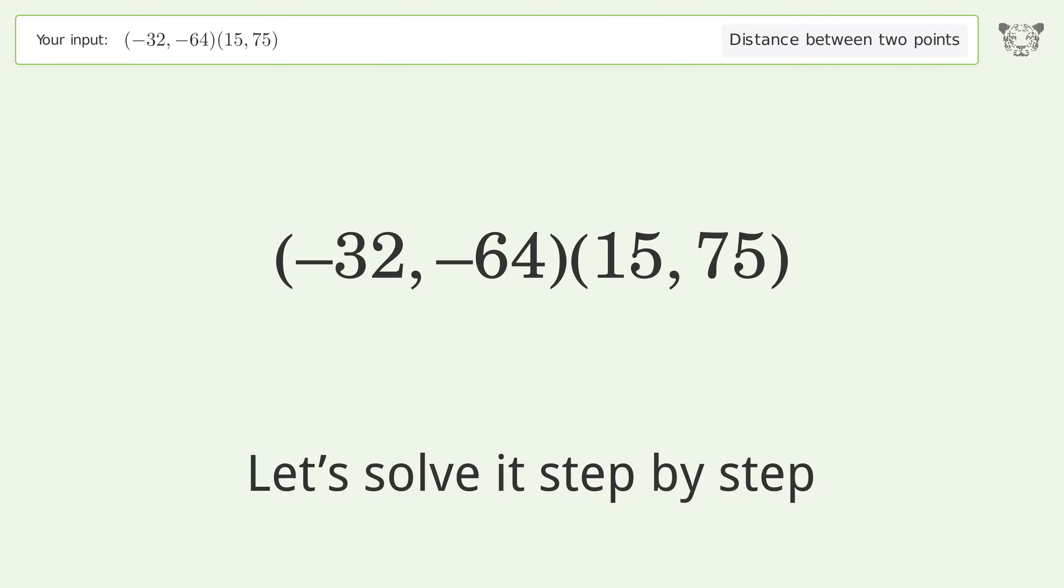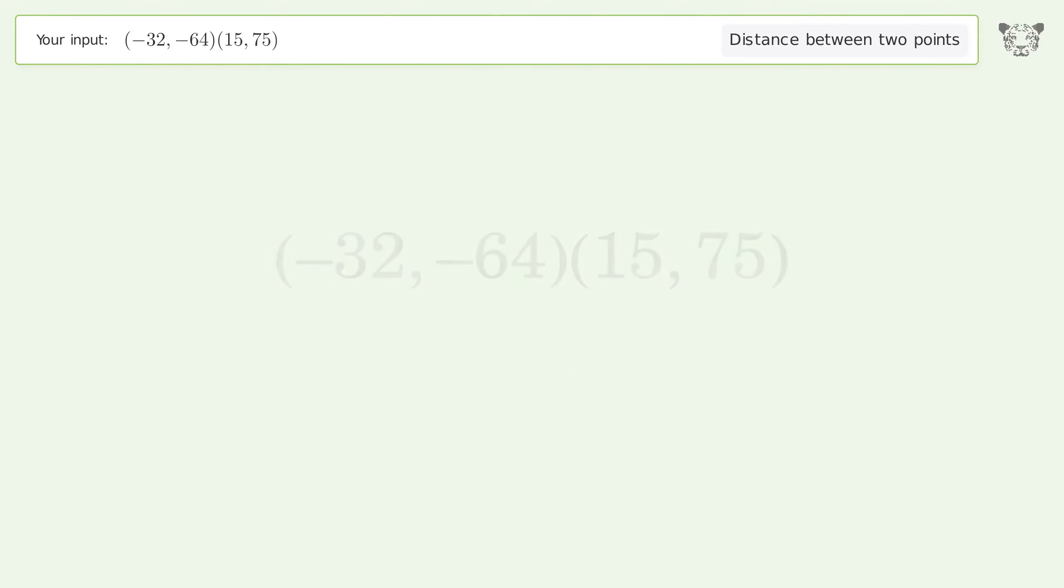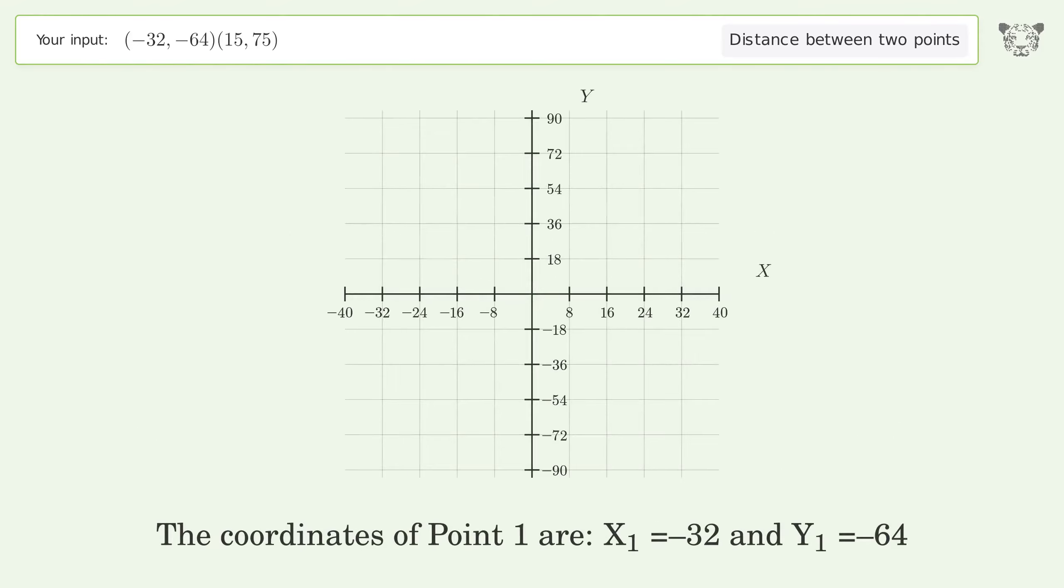Let's solve it step by step. Plot the two points and calculate the distance using the formula. The coordinates of point 1 are x₁ = -32 and y₁ = -64. The coordinates of point 2 are x₂ = 15 and y₂ = 75.